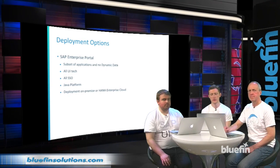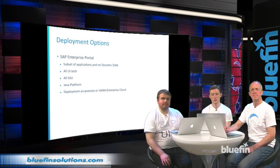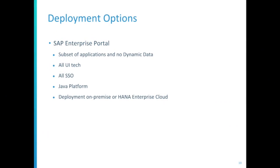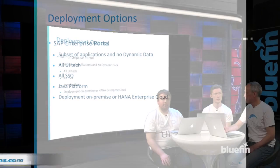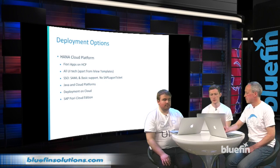Then we've got the SAP Enterprise Portal, which supports a substantially reduced subset of applications, but it does support all the UI technology, which means you could add in bespoke applications easily enough. It also supports all the SSO options. Much like the ABAP front-end server, it runs on ABAP and is deployed either on-premise or via HANA Enterprise Cloud.